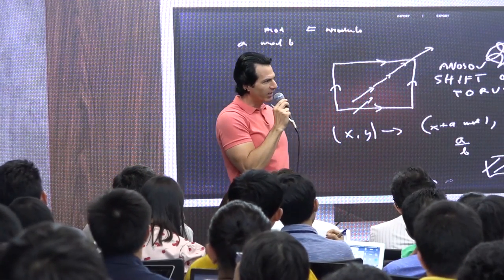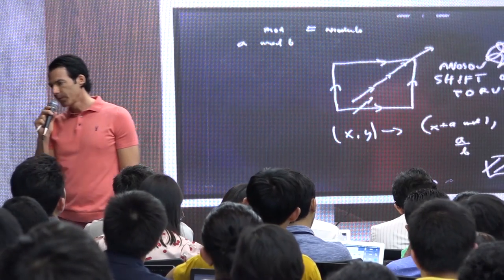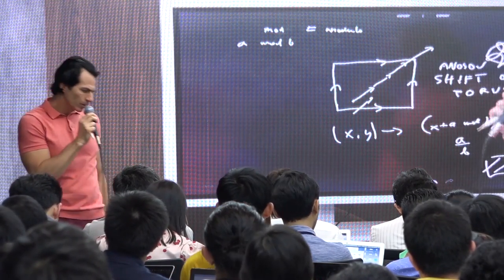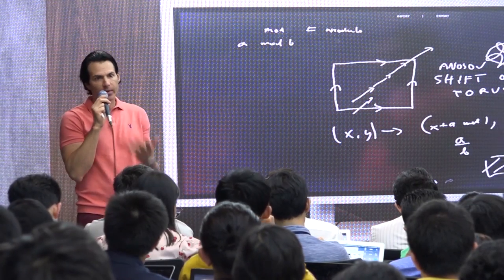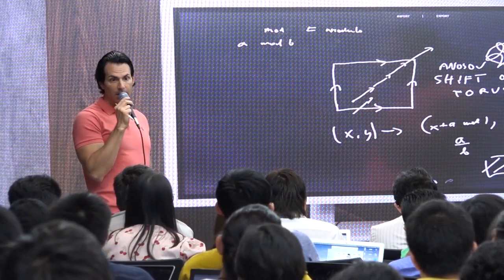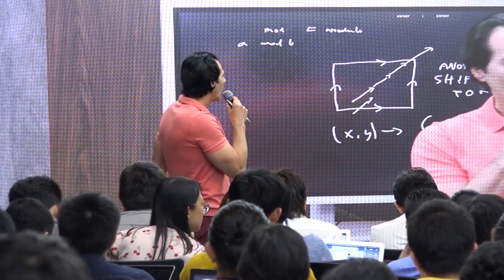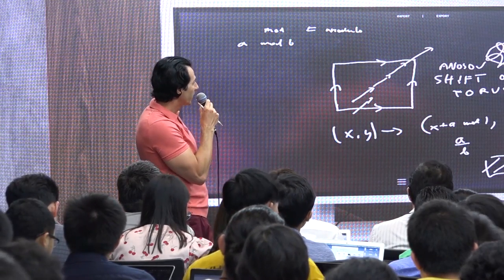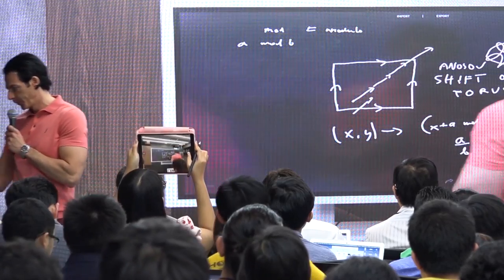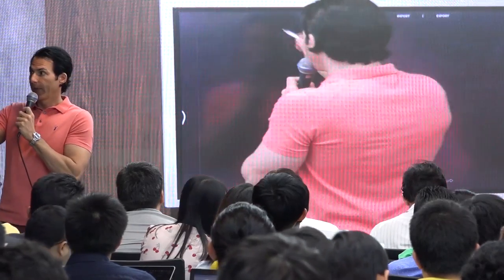That's another example of a dynamical system. As you may have observed, all those examples were linear — I was only talking about linear mappings: multiplying by two or adding constants. And it already gives us something interesting. Now let's go non-linear.